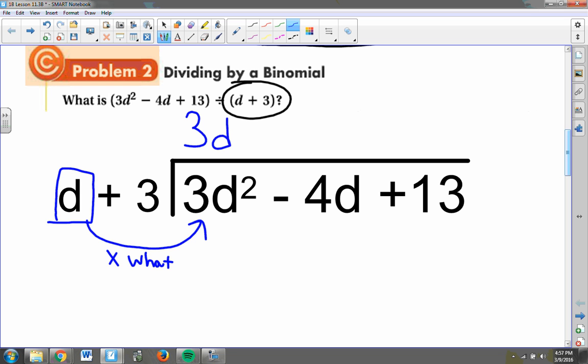Then I multiply, as I did previously. I multiply this term by all of this, by d plus 3. And that gives me 3d squared, 3d times d, plus 3d times the 3, which gives me plus 9d.